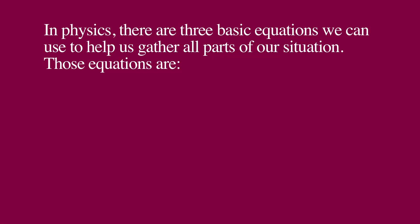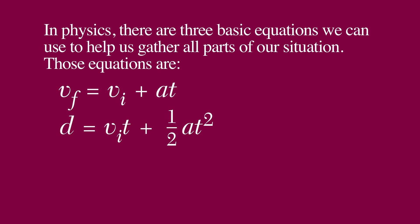In physics, there are three basic equations we can use to help us gather all parts of our situation. Those equations are: velocity final equals velocity initial plus acceleration times time; distance equals velocity initial times time plus one half acceleration times time squared; and velocity final squared equals velocity initial squared plus two times acceleration times distance.